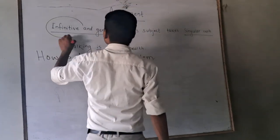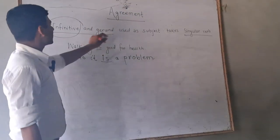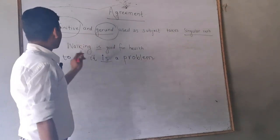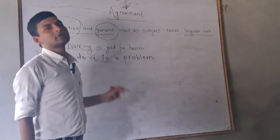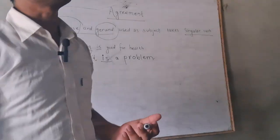Infinitive means to plus verb. Gerund means verbal form. Looks like verb but it is noun. It is called verbal noun.